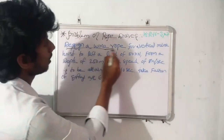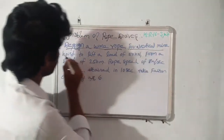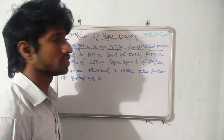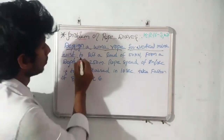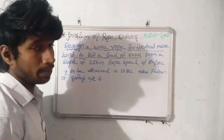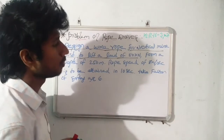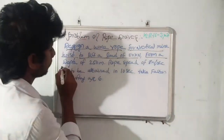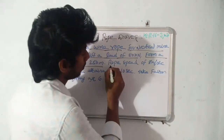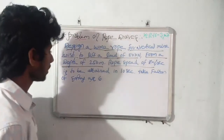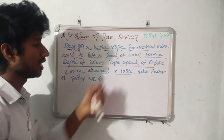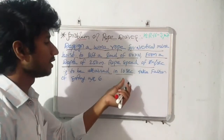Design a wire rope for a vertical mine hoist. We are going to design one wire rope for mine hoist applications to lift a load of 50 kN from a depth of 250 meters. The rope speed of 80 meters per second is to be attained in 10 seconds. Here the speed of the rope is provided with respect to time.